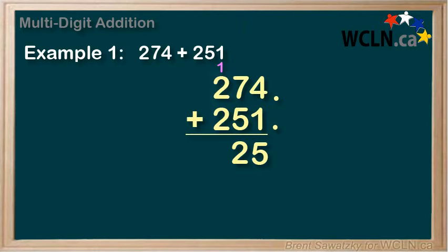Finally, let's look at the hundreds column. Two plus two is four but we remember our carried one and four plus one is five. So we write five in our hundreds column and we're done.